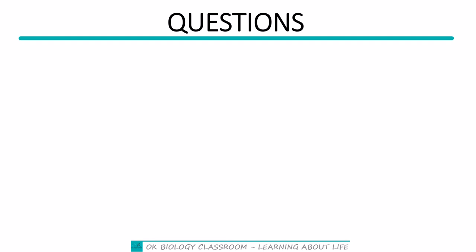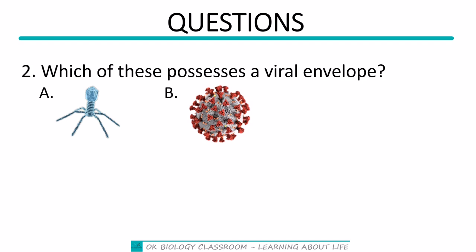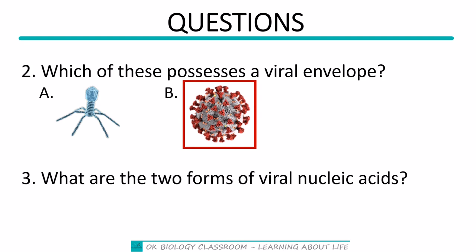Moving to question two: which of these possesses a viral envelope? The answer is B. And finally, what are the two forms of viral nucleic acids? The answer is DNA or RNA.